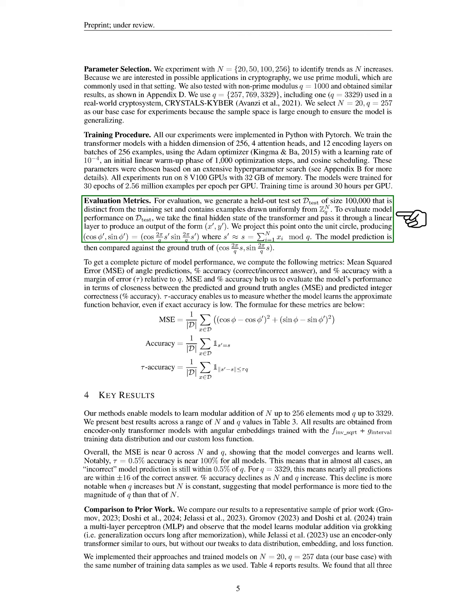For evaluation, we create a separate test set of 100,000 examples that is distinct from the training set, drawn uniformly from the specified range. To assess model performance, we take the final hidden state of the transformer and pass it through a linear layer to produce outputs. We then project these outputs onto the unit circle to compare the model's predictions against the actual values. We compute several metrics, including the mean squared error (MSE) of angle predictions, accuracy percentage, and accuracy with a margin of error relative to the modulus. These metrics help us evaluate how closely the predicted angles match the true values and whether the model captures the approximate behavior of the function.